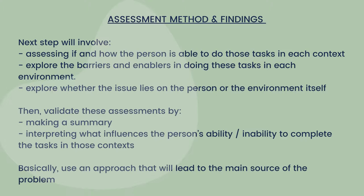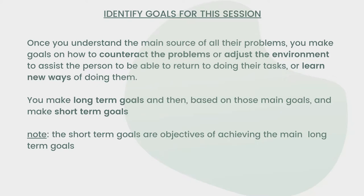You want to validate your assessments and make a summary — interpreting what influences their ability to complete or inability to complete tasks in different environments. Make sure you assess the person's ability to do tasks. For example, a patient in a wheelchair living in a small flat on the second floor — ask them if they're still able to go shopping. If they are, ask how they've adjusted their lifestyle to complete these tasks, and think about what is standing in the way between how they're currently doing it and how they'd like to do it — whether it's environmental factors like a flight of stairs, or an issue within the person that's a barrier to completing their tasks.